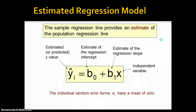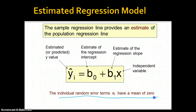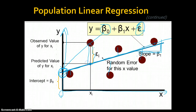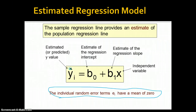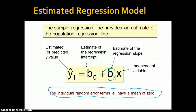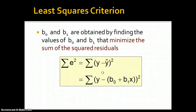A sample regression line is the same thing — we've just replaced the betas with b's, and we drop the error term because the individual random error terms have a mean of zero. In other words, if you add up all of those differences, it's going to be zero. Here's the dependent variable, here's the y-intercept, and here's the slope or regression coefficient — probably the most important coefficient. B sub-zero and b sub-one are obtained by finding the values that minimize the sum of squared residuals.